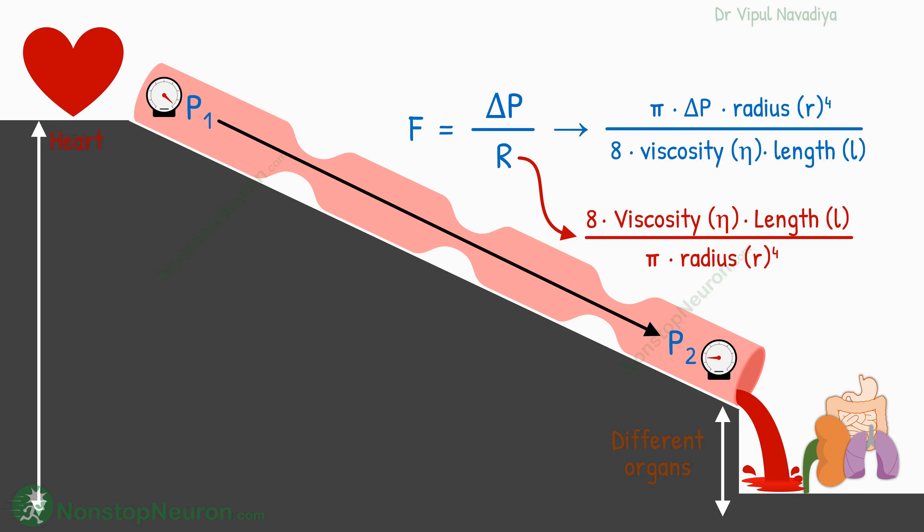Don't worry. We are not going to do any math here. Our body's control system is not interested in math. He is just looking at these factors and thinking of which one to tweak to control the flow. First, let's consider length. Well, the length of the blood vessels is fixed as per your body size. So that factor is out of discussion right away.